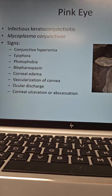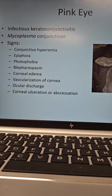Epiphora means excessive tearing. Photophobia is sensitivity to light. Blepharospasms are excessive blinking. Corneal edema means fluid buildup on our cornea, so they're going to have like a bubble eye. Vascularization of the cornea — the white part of the eye is going to get more red. We're going to have excessive vascularization there.